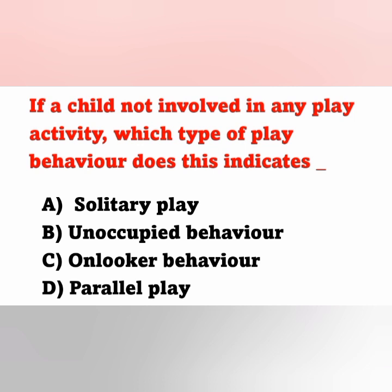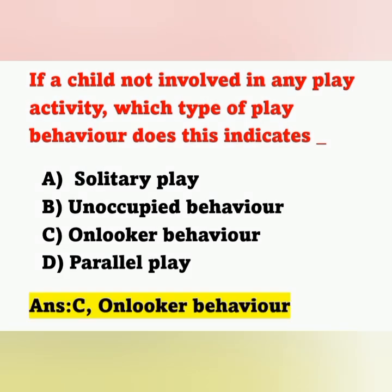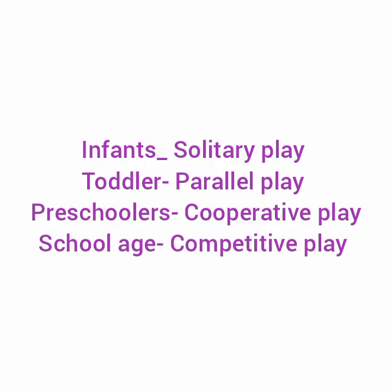First question: if a child is not involved in any play activity, which type of play behavior does this indicate? Option A: solitary play. Option B: unoccupied behavior. Option C: onlooker behavior. Option D: parallel play. The child is not involving in the play activity — that is known as onlooker behavior. Option C is the correct answer.